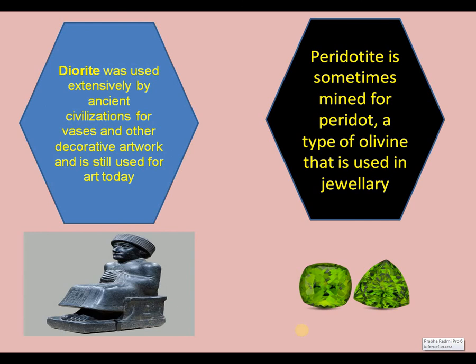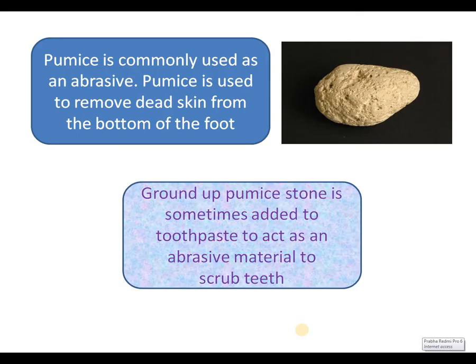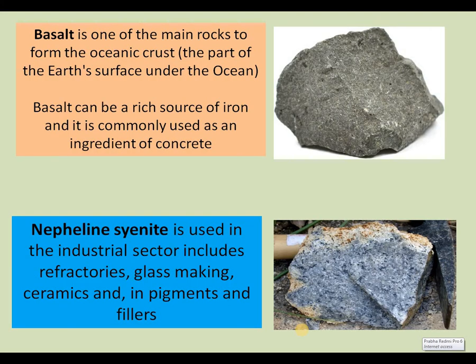Diorite was used extensively by ancient civilizations for vases and other decorative artwork and is still used for art today. Peridotite is sometimes the source of peridot, a type of olivine used in jewellery — you can see the olivine crystals. Pumice is commonly used as an abrasive, generally used to remove dead skin especially from the bottom of the foot. Ground-up pumice stone is sometimes added to toothpaste to act as an abrasive material to scrub teeth.